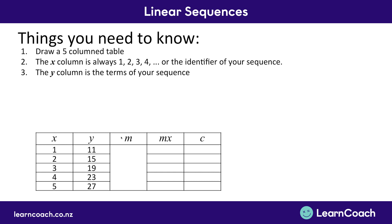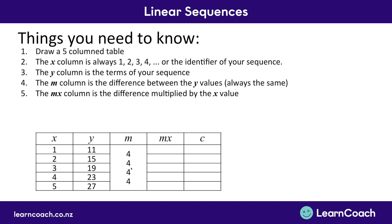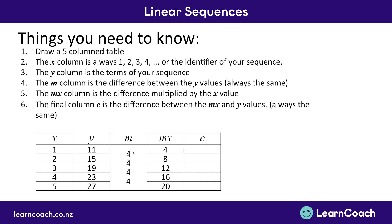The M column is the difference between your Y values — we had a difference of 4. Then in the MX column, multiply M by each X value: 4 times 1, 4 times 2, 4 times 3, 4 times 4, 4 times 5. For C, look at the difference between MX and Y — in the previous example we needed to add 7, so C was 7.